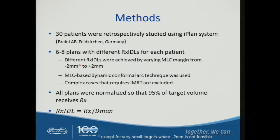Here's the method: we evaluated 30 patients using the Apian system. For each patient, we developed about six to eight different plans by varying MLC margins, changing the prescription isodose line from negative 2 mm up to 2 mm. We used dynamic conformal arc to streamline the study, so complex cases requiring IMRT were excluded. All cases were normalized so that 95% of the target volume received the prescription dose.